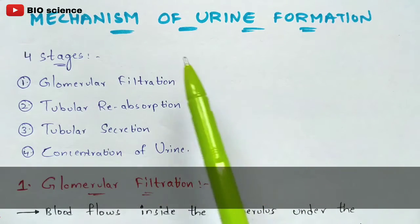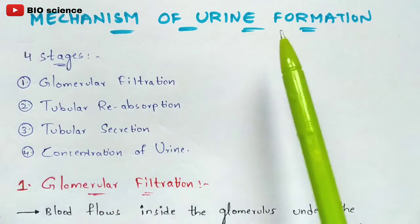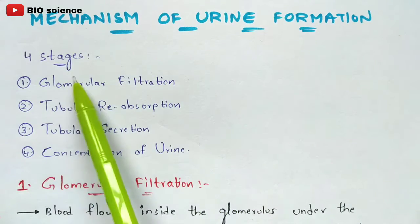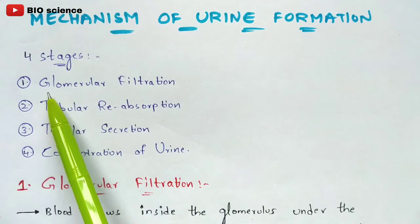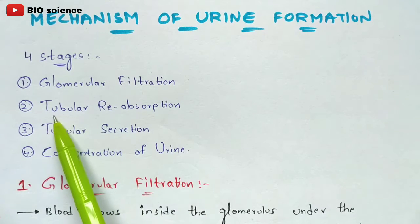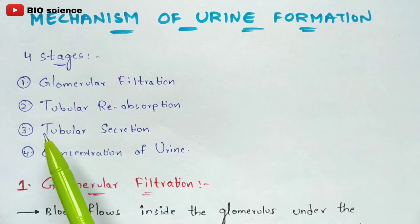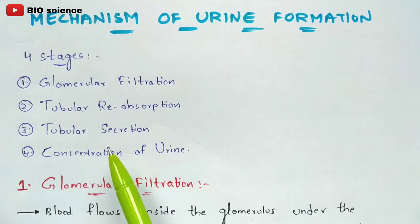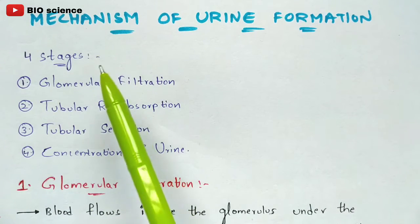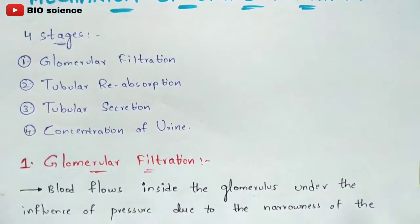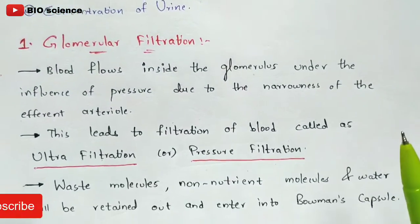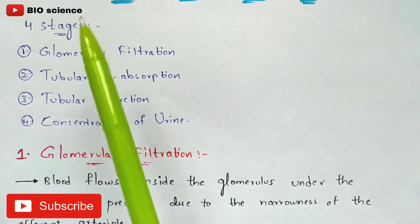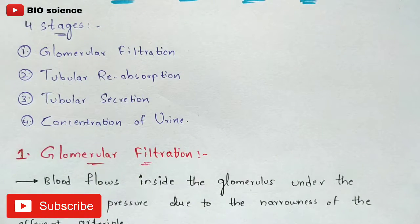In this video we are going to discuss about the mechanism of urine formation, and this mechanism will be done in four stages: the first stage is glomerular filtration, second stage is tubular reabsorption, third is tubular secretion, and the fourth one is concentration of urine. Let us discuss all of the stages along with the diagram.